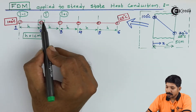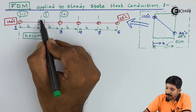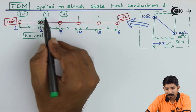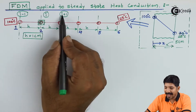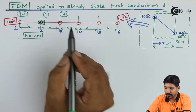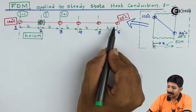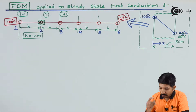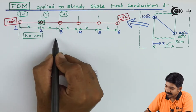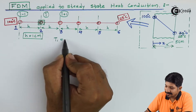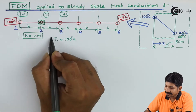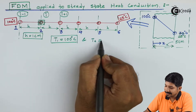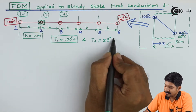The shared node is called the i-node, so the next node is i+1 and the previous node is i-1. The actual names of each node are 1, 2, 3, 4, 5, and 6. We know that T1 in this case is given as 100 degree Celsius and T6 is 25 degree Celsius.